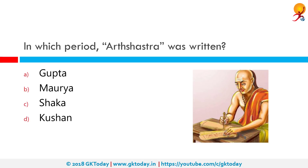In which period was the Artha Shastra written? Artha Shastra was written by Kautalya, also known as Vishnu Gupta or Chanakya, who was a professor at Takshila University and later the prime minister of the Maurya empire. So the correct answer is the Maurya period. The manuscript was discovered by R. Shamasastry in 1904. It has been divided into 15 Adhikarans and 180 Prakarans, is related to money and politics, and contains 6000 Shlokas.